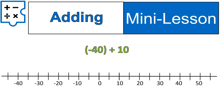Now we come to adding a negative and a positive, and that's sometimes confusing. So let's take this pretty slow, but we're going to follow exactly the same steps as in the previous example. We're going to start at negative 40, and then we're going to add positive 10. If we're adding positive 10, it means we're moving 10 spaces to the right, or increasing by 10, which brings us to negative 30.